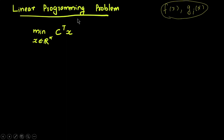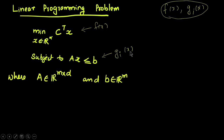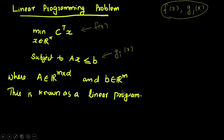The standard form of a linear programming problem is: minimize over x in R^n, c^T x — the objective function in matrix format — subject to the constraint Ax ≤ b, where A belongs to R^(M×D) and b belongs to R^M. Here A is a matrix and b is also a vector, expressed in linear equation format.